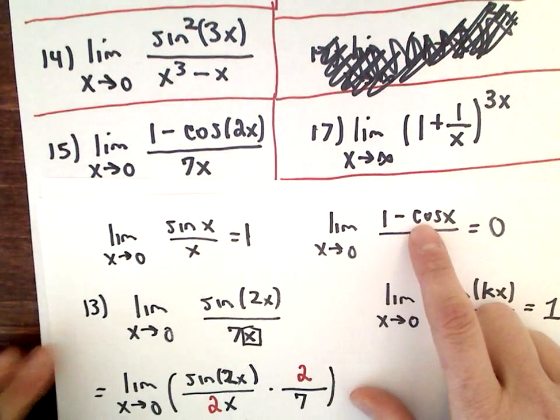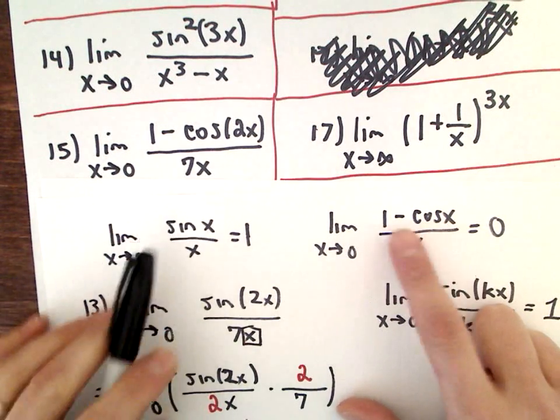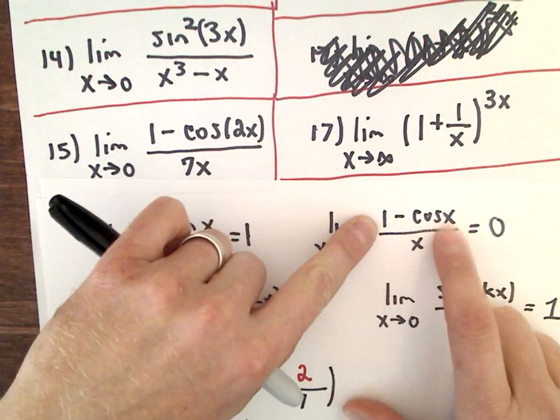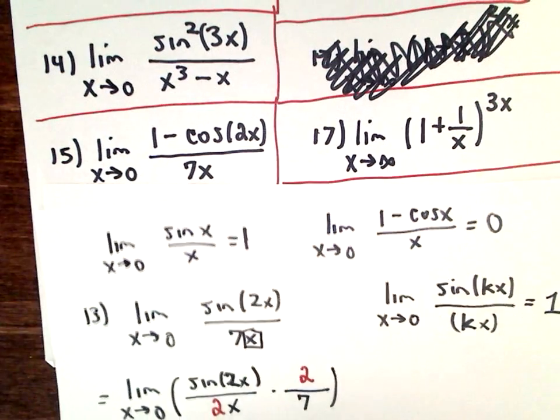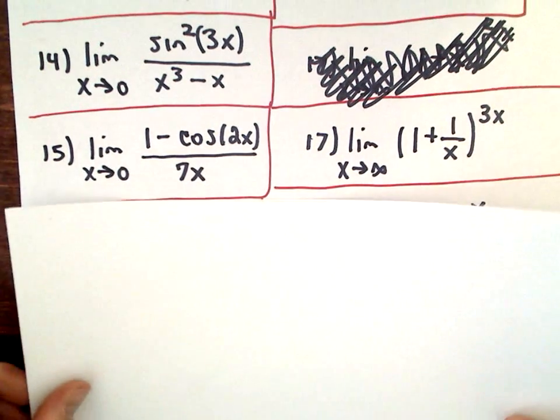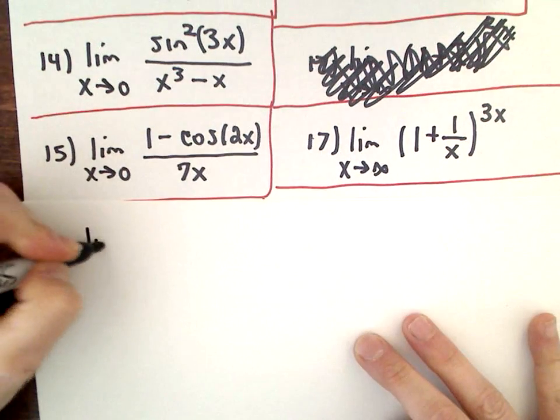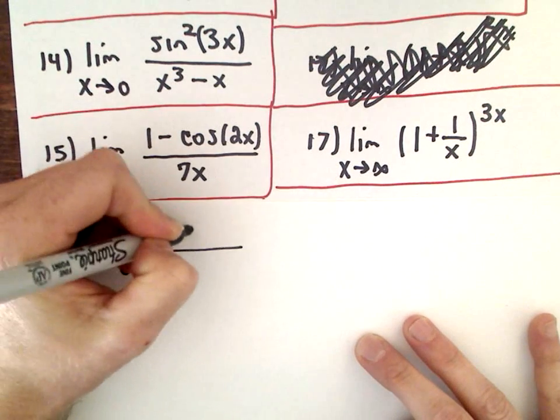Same thing. Now I see this 1 minus, in number 15, I see this 1 minus cosine of 2x over 7x. The same thing. If I had 1 minus cosine of 2x over 2x, and x is approaching zero, that limit's going to be zero. So this is going to be kind of similar to 13, in the sense that I'm going to make that appear. So I've got the limit as x approaches zero. I'm going to do my same little thing of breaking up my fraction.